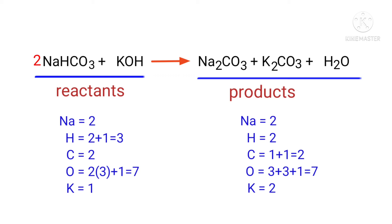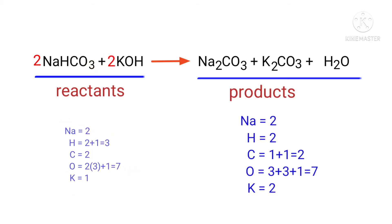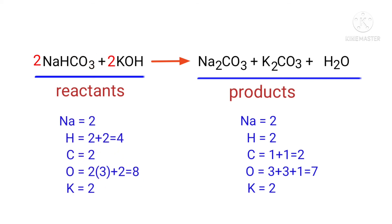Now we need to balance the potassium atoms. To do this we need to put a coefficient of 2 in front of KOH. The potassium atoms are now balanced.